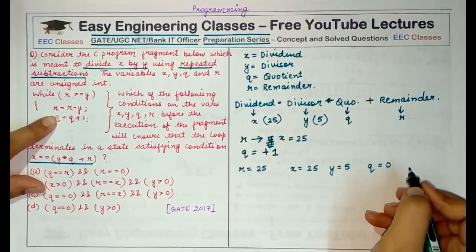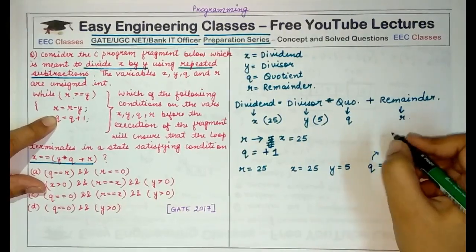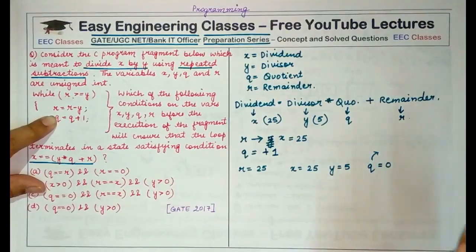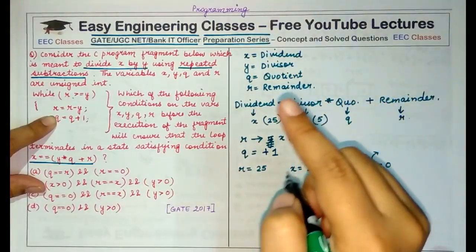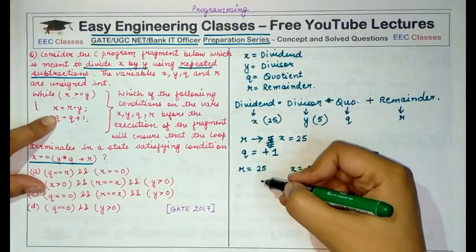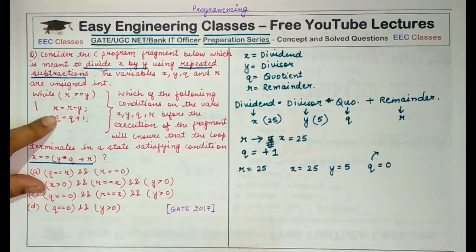Why must it be initialized to 0? Because quotient is indirectly counting the number of times the divisor has been subtracted from the remainder, and by the time remainder becomes smaller than the divisor,